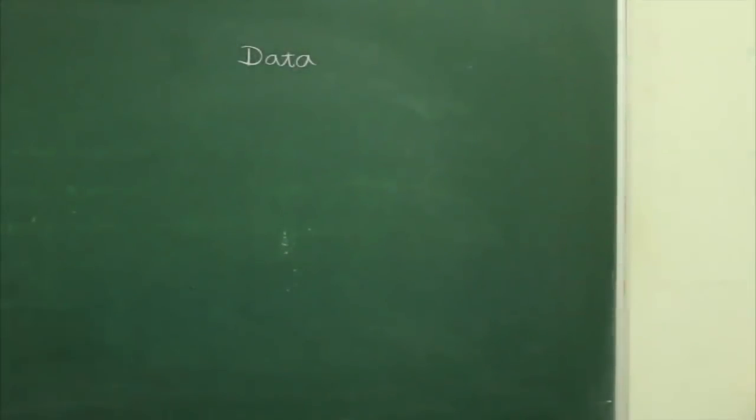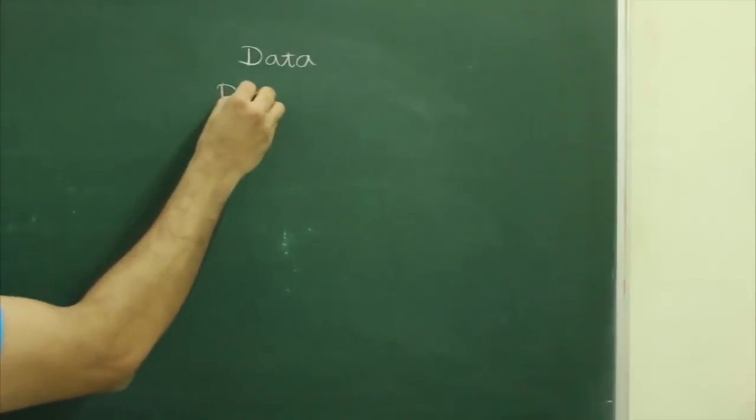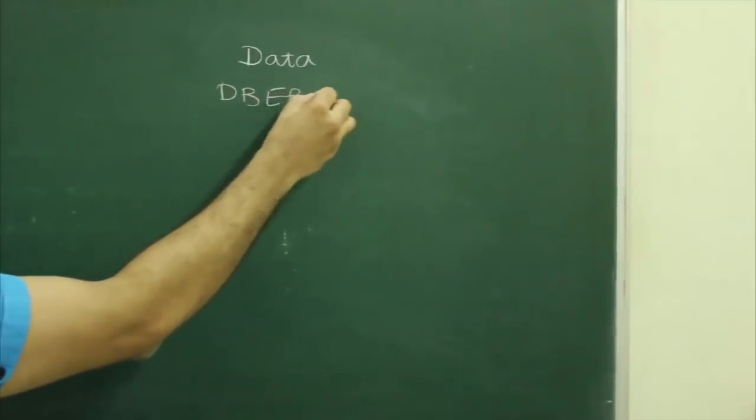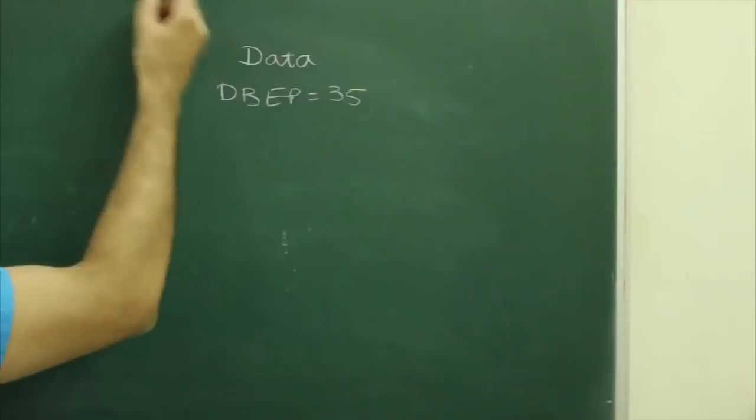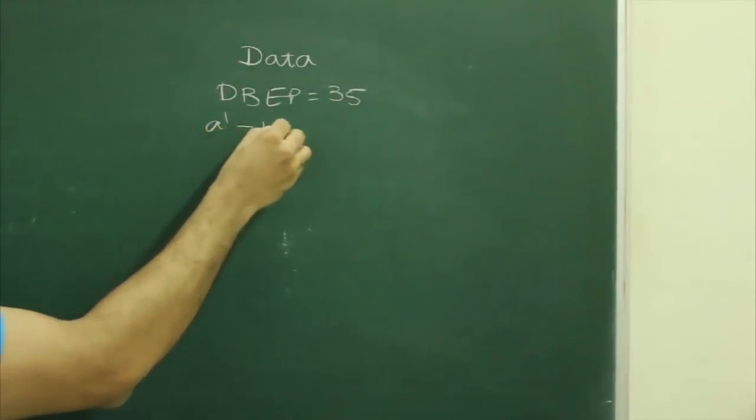First we will write given data: DBEF = 35mm, a' = 10 mm below xy, a = 15 mm below xy, b' = 40 mm below xy, b = 40 mm above xy.